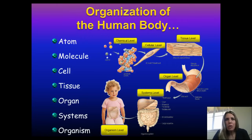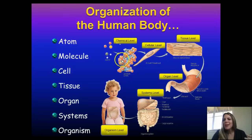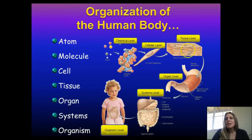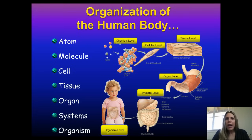Going from smallest to largest: atoms come together to make molecules, molecules come together to make up cells, cells come together to make tissues, which make up our organs, which collectively become organ systems, to make the whole organism. You can think of us as really just a bunch of atoms walking around.